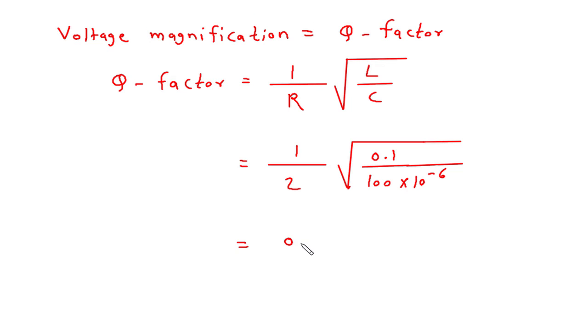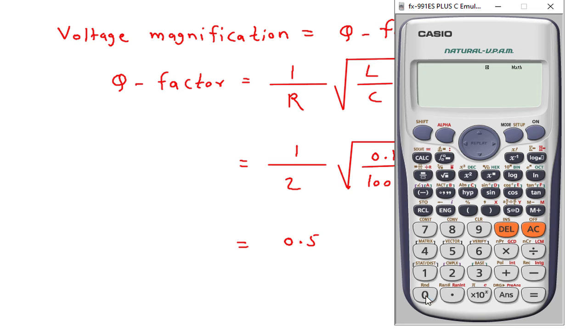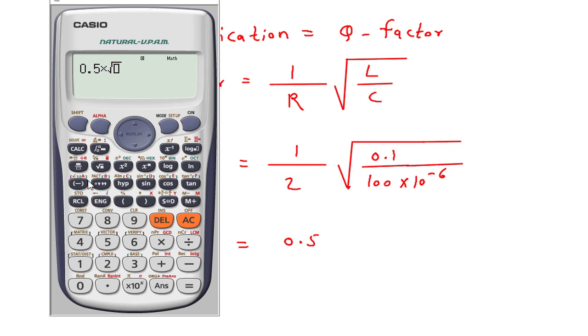We will solve this whole. 0.5 multiplied by under root of 0.1 divided by 100 into 10 to the power minus 6. It is 15.81.